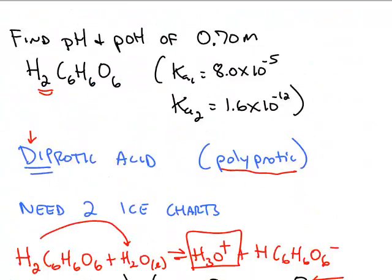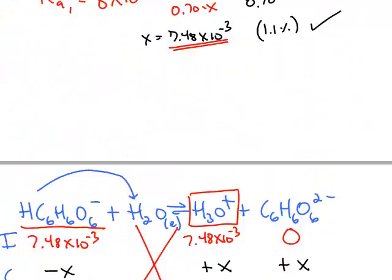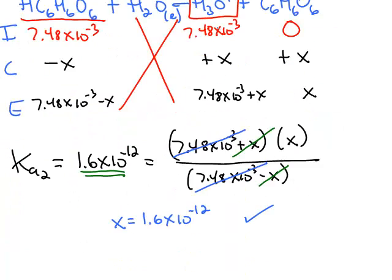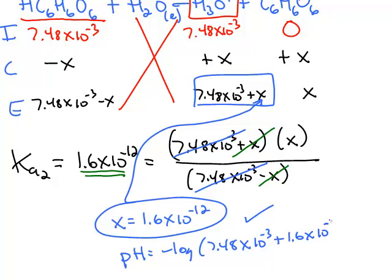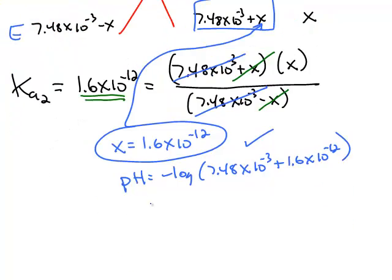And so now the ultimate question was what's the pH and what's the pOH. So we need the concentration of hydronium. If we take this answer for x and plug it into this ICE chart, the pH is 7.48 times 10 to the negative 3. If we add x to it, we know that that's not going to change our value. The pH works out to be 2.13. And the pOH, subtract that from 14, 11.87.